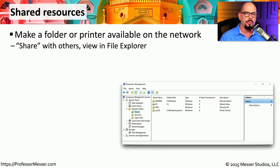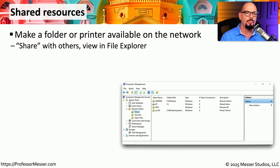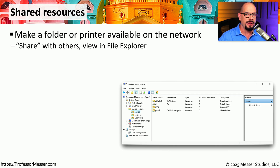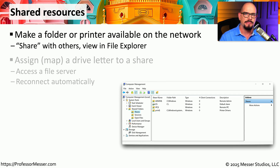In Windows, when you want to create access to a file or a folder that can be available across the network, we refer to that as a Windows Share. You are sharing that information, and it could be a file, a folder, a printer, or any other resource that you can access across the network.